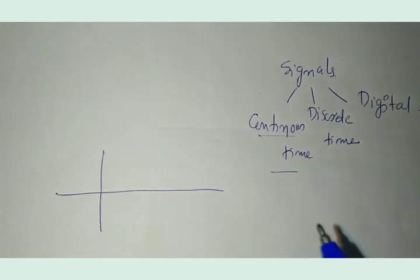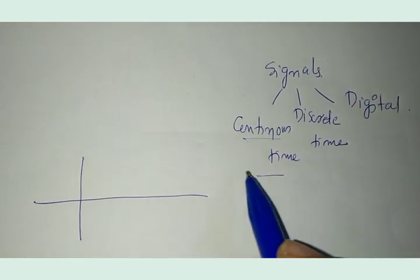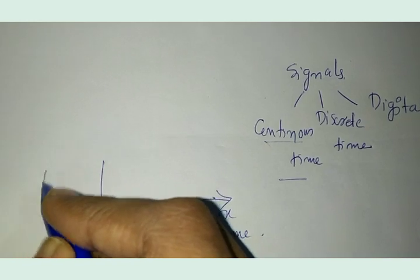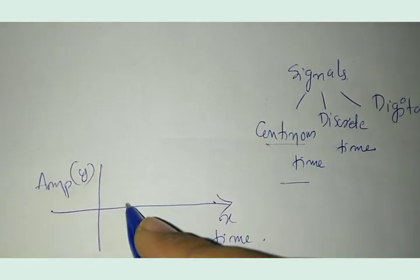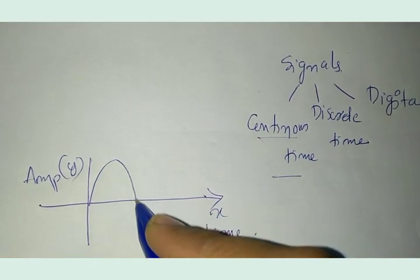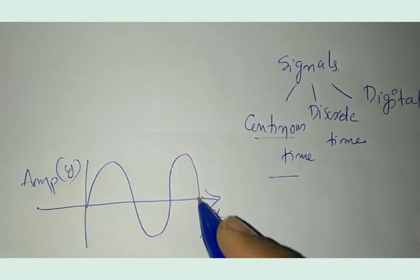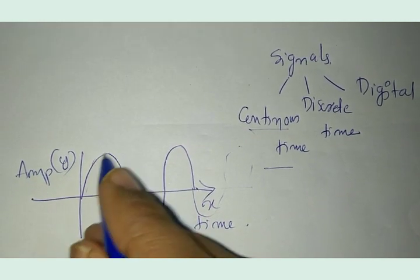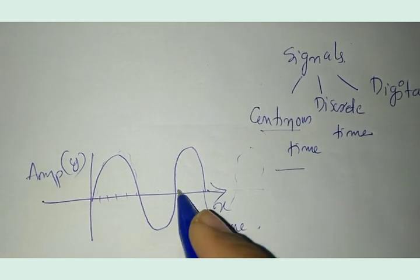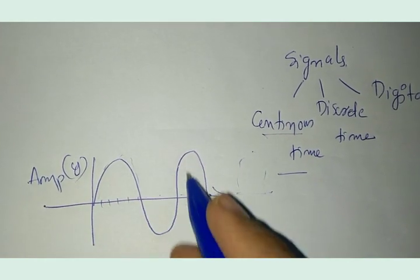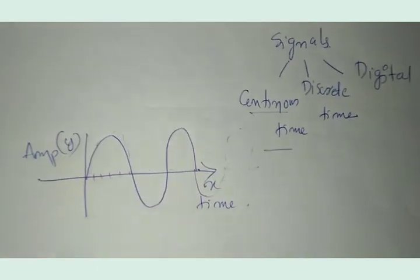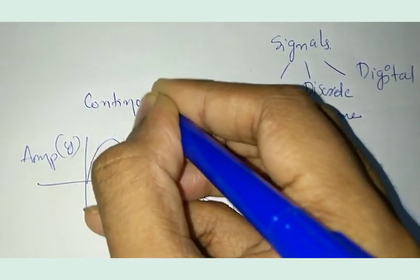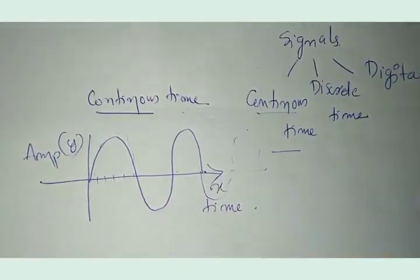A signal which is having values at all time points is called a continuous time signal. In the x-axis I'm going to take the time parameter and in the y-axis the amplitude parameter. For all time points, you are continuously obtaining the value of the signal, and such a signal is called a continuous time signal.